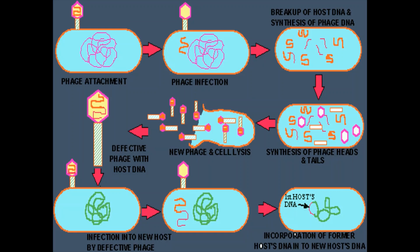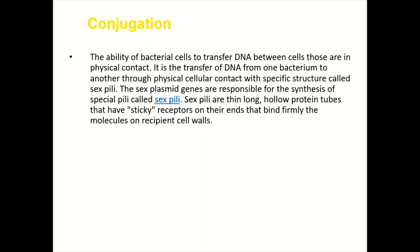The next process is conjugation, which mainly takes place through sex pilli. Conjugation is the ability of bacterial cells to transfer DNA between cells through physical contact. It is the transfer of DNA from one bacterium to another through physical cellular contact using specific structures called sex pilli. The sex plasmid genes are responsible for the synthesis of these special pilli, which are called sex pilli or F pilli.